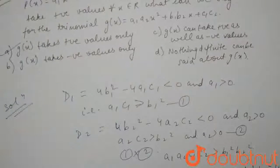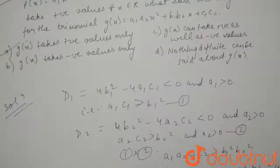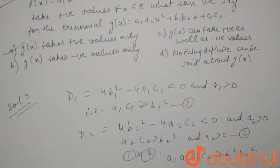So, option a will be the answer. As a₁ and a₂ are always positive, the coefficient of x² is positive and the discriminant is negative. So, the polynomial will only take positive values. Option a is the correct answer. Thank you!